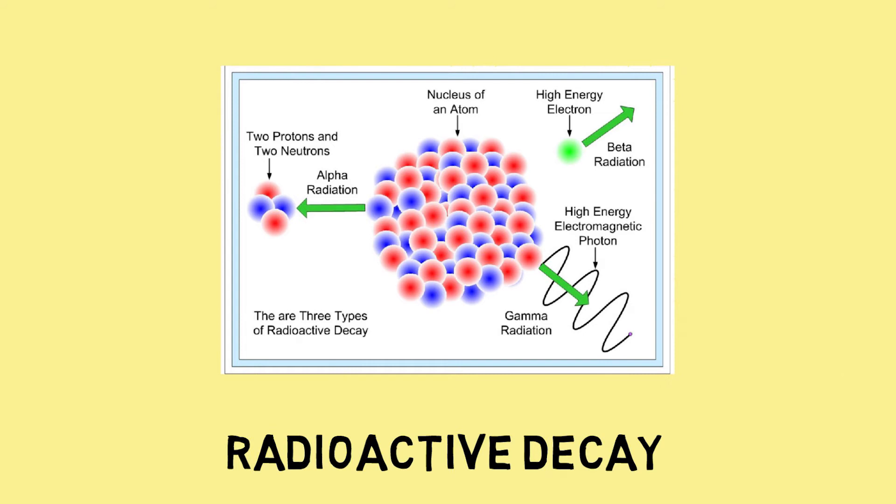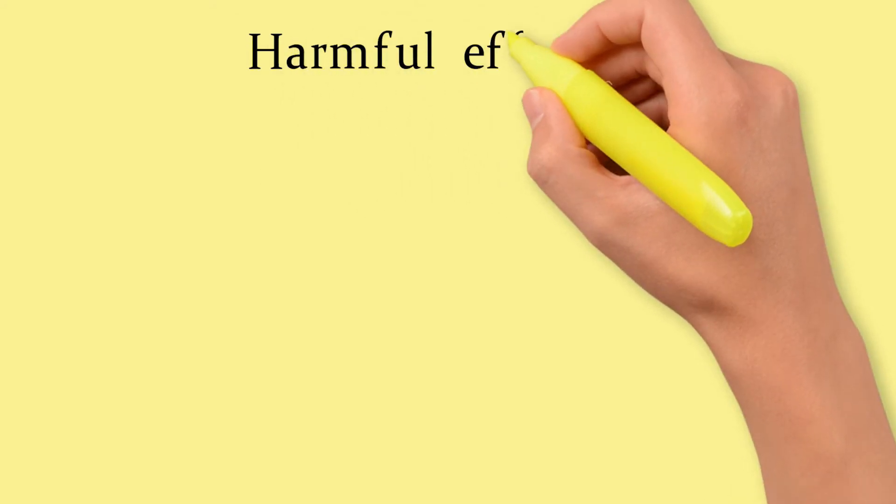However, there is a huge amount of energy released in the process as well as a lot of harmful radiation in the form of alpha, beta and gamma rays. The level of hazard depends on the level of contamination.